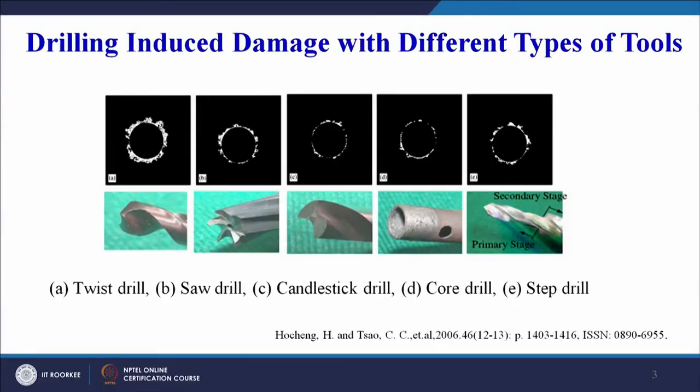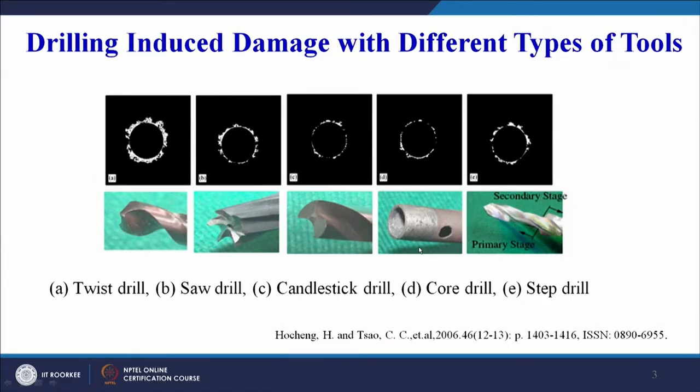The first method to avoid damage is appropriate selection of tool point geometry. Prior to that we need to judiciously select our cutting speed and feed rate. Apart from that, we can control the tool point geometry. On screen you can see: the twist drill, saw drill, candlestick drill, core drill, and step drill — different types of tool point geometries that can be used for making holes in different types of composite materials.